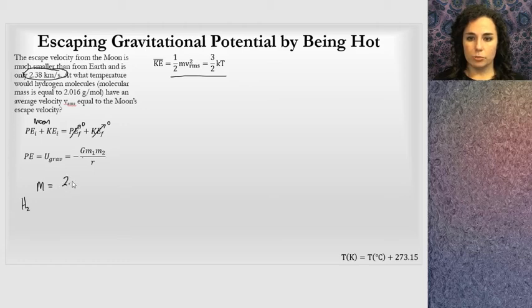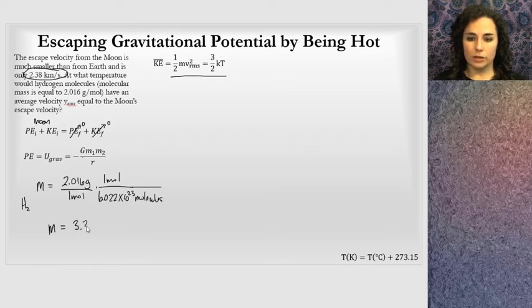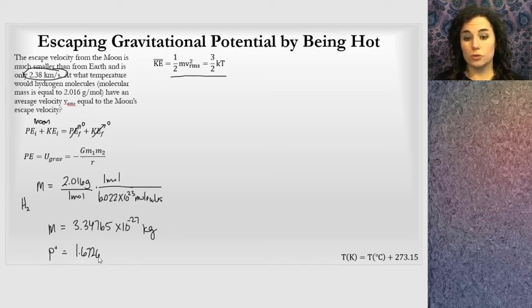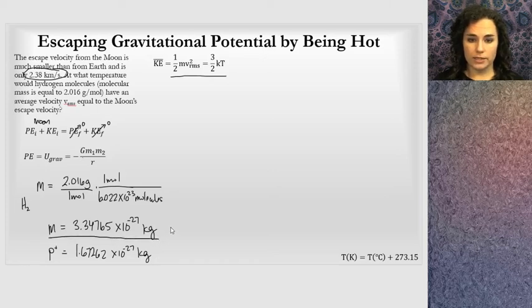Mass equals 2.016 grams per one mole. I showed you on the previous page one mole is 6.022 times 10 to the 23rd molecules. When I calculate this, I get the mass to be 3.34765 times 10 to the negative 27 kilograms, which seems about right if I think of the mass of just one proton. Remember, a hydrogen atom would be two protons. The mass of one proton is 1.67262 times 10 to the negative 27 kilograms. If I multiply that by 2 and take some energy away from binding energy, we get this mass.